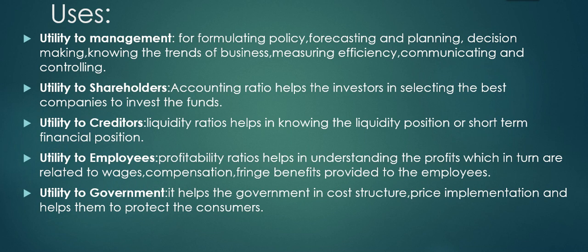Point four: utility to employees. Profitability ratios help in understanding the profits, which in turn are related to wages, compensation, and fringe benefits provided to employees. When profits are increasing, employees will receive the benefits they were promised. When profits are decreasing, wages or salaries may stagnate. So profitability ratios are important for employees to know whether they will receive increased wages, compensation, and fringe benefits.